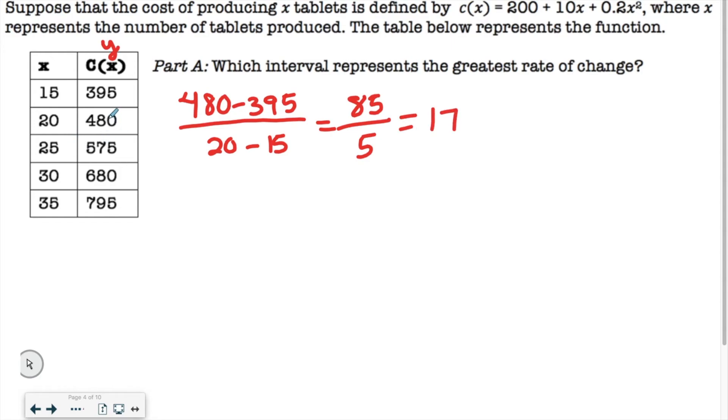And then we're going to do the next interval, which is 575 minus 480, 25 minus 20. So 575 minus 480 is 95. So we have a bigger number on top this time than the last one. And 25 minus 20 is 5 again. And you divide that, and you get 19. So far, this one is the biggest interval, but we're not sure yet. We have to keep going.